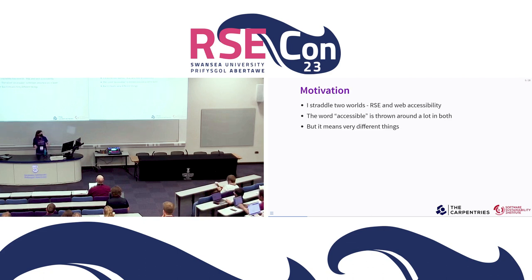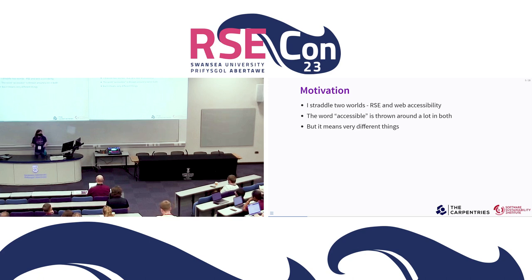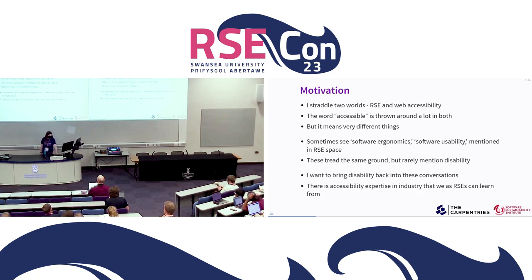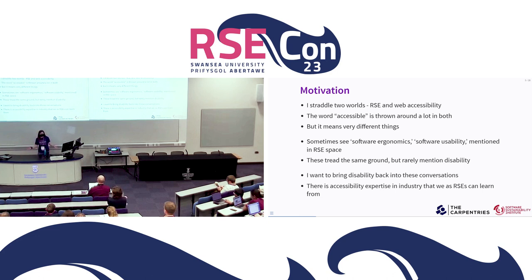My motivation for this talk specifically is that I've ended up straddling two worlds: the RSE world and the web accessibility world, which mostly exists in industry. The word 'accessible' gets thrown around a lot in both, but it tends to mean quite different things in each context. Sometimes I see talks or discussions about things like software ergonomics or software usability in RSE space that tread the same ground, but they rarely mention disability specifically. I want to bring disability back into these conversations — it's disability activists that started a lot of this work off in the very beginning. And there's a lot of accessibility expertise in industry that we in the RSE community can learn from.